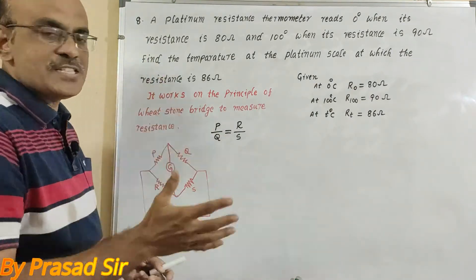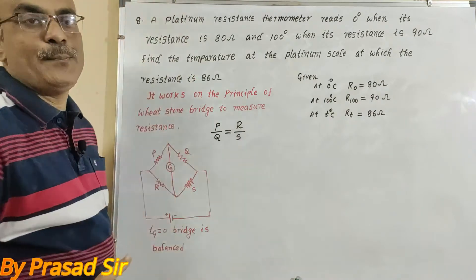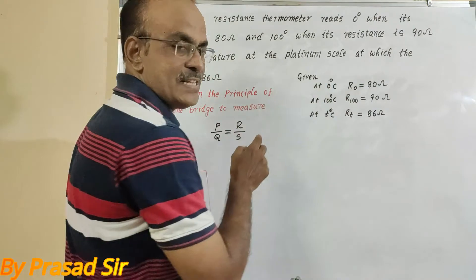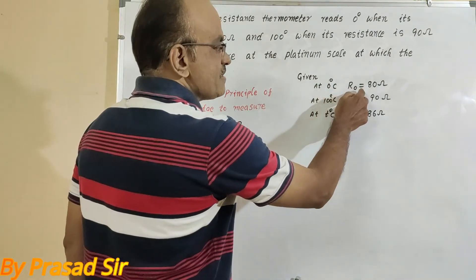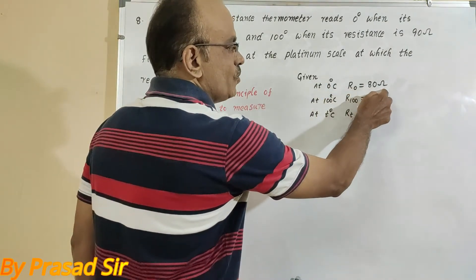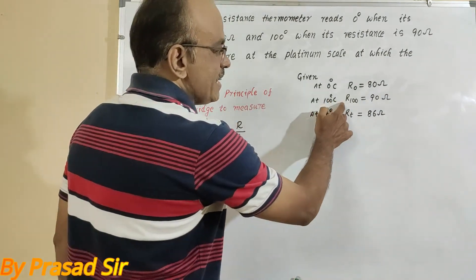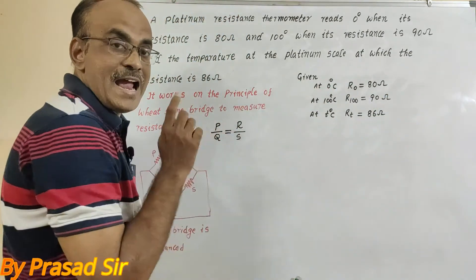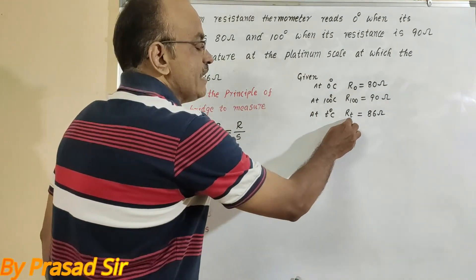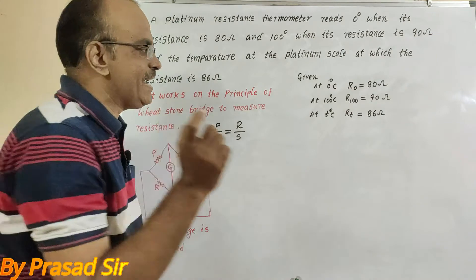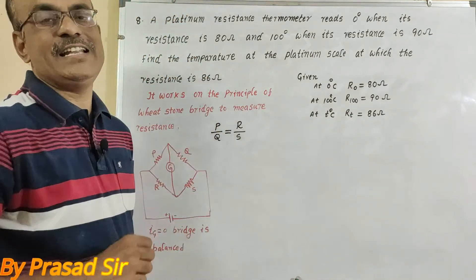Now first of all to calculate the problem, here is what is given: at 0 degrees centigrade, resistance equals 80 ohms. At 100 degrees centigrade, resistance is 90 ohms. At T degrees centigrade, resistance equals 86 ohms. Which one we want to calculate? This T degrees centigrade is required.